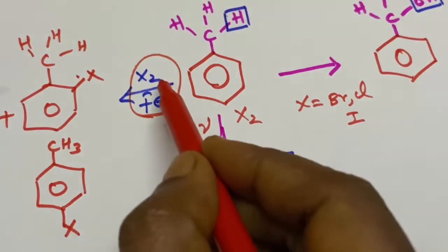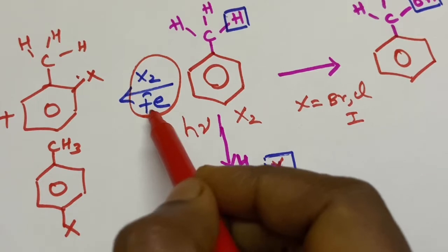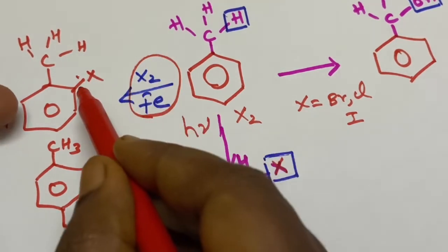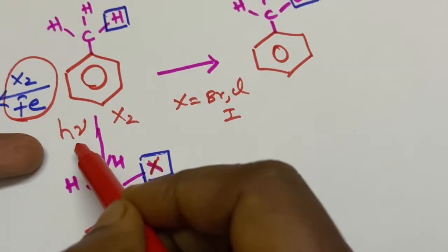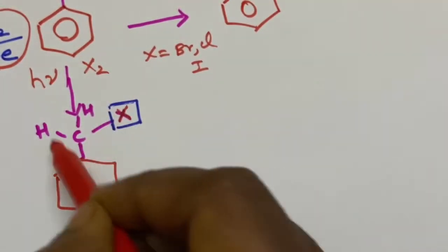So please recall. Halogenation in presence of any metal will take place in the ring. And if you use halogen in presence of light, the reaction will take place in the side chain.